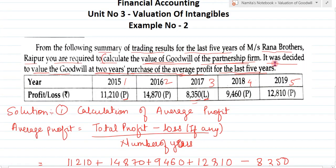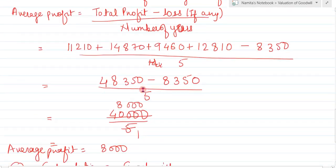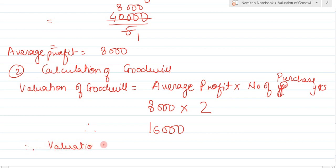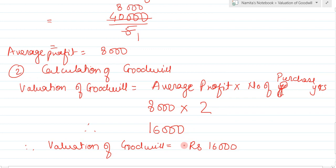Now read the question. It was decided to value the goodwill at 2 years purchase of average profit, so the number of purchase years is 2. Therefore, 8,050 multiplied by 2 equals 16,100. So the valuation of goodwill is equal to rupees 16,100.